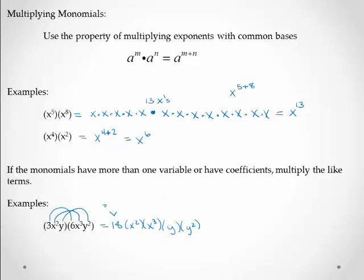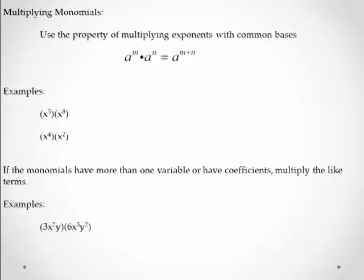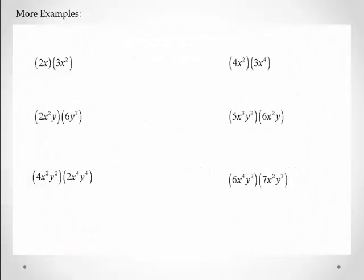And this was 3 times 6. x squared times x to the 3rd—I add the exponents, so 2 plus 3 gives me x to the 5th. And then y times y squared. If there's no exponent, it's an invisible 1, so it's 1 plus 2. That's y to the 3rd.